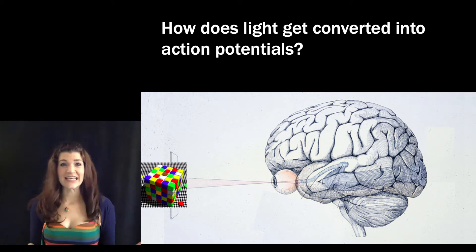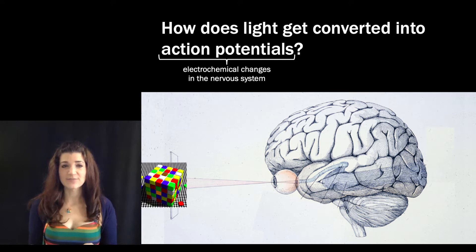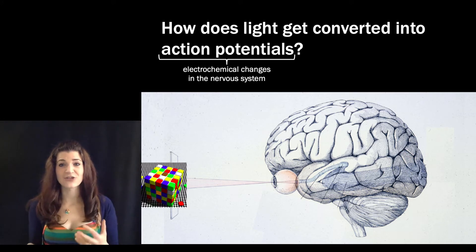Brains themselves can't see. Brains are just like juicy meatloaves. So all they can do is interpret a very specific set of electrochemical signals called action potentials. And in week four we're going to talk about how we go from the presence of light to action potentials, to that electrochemical code.